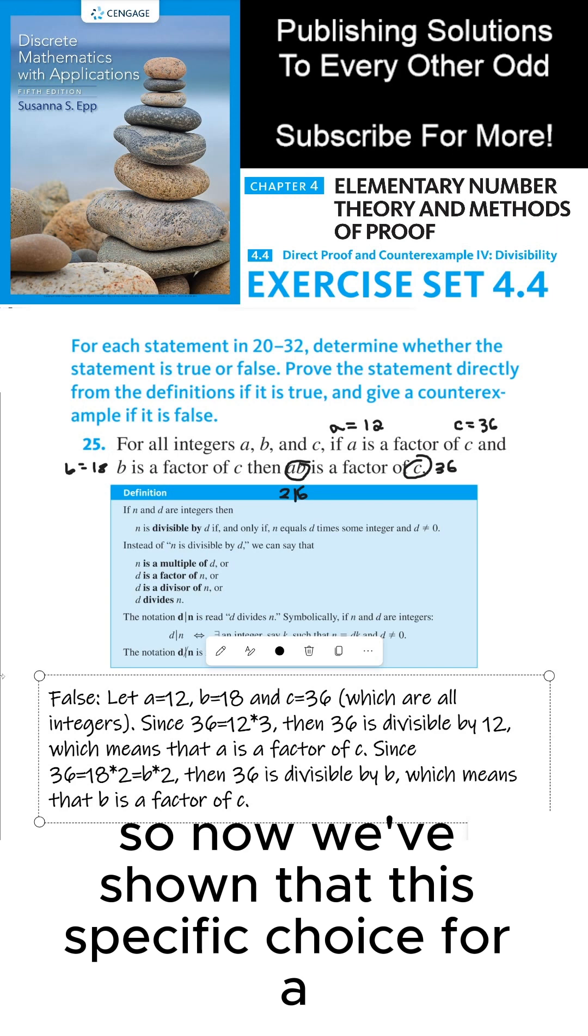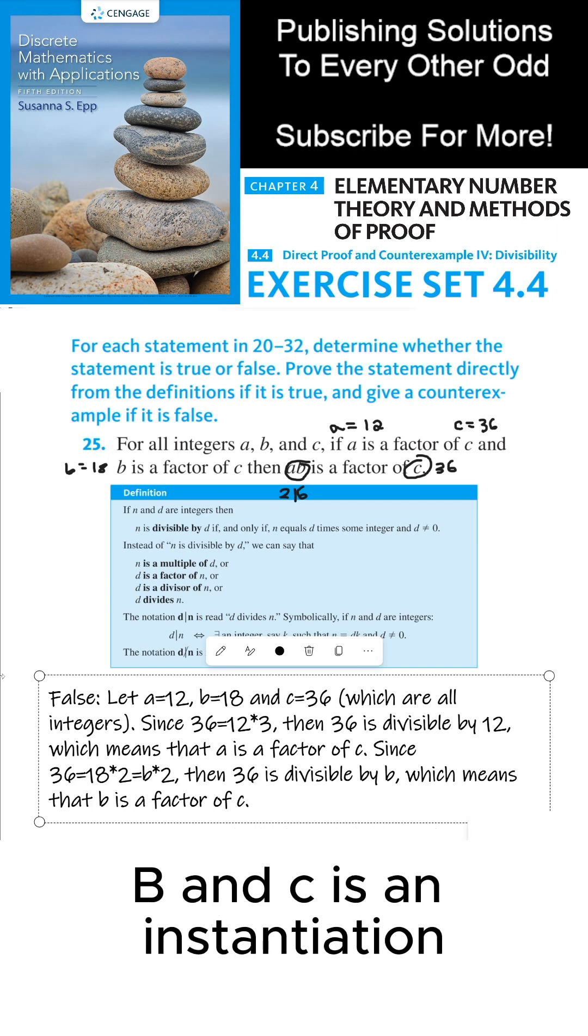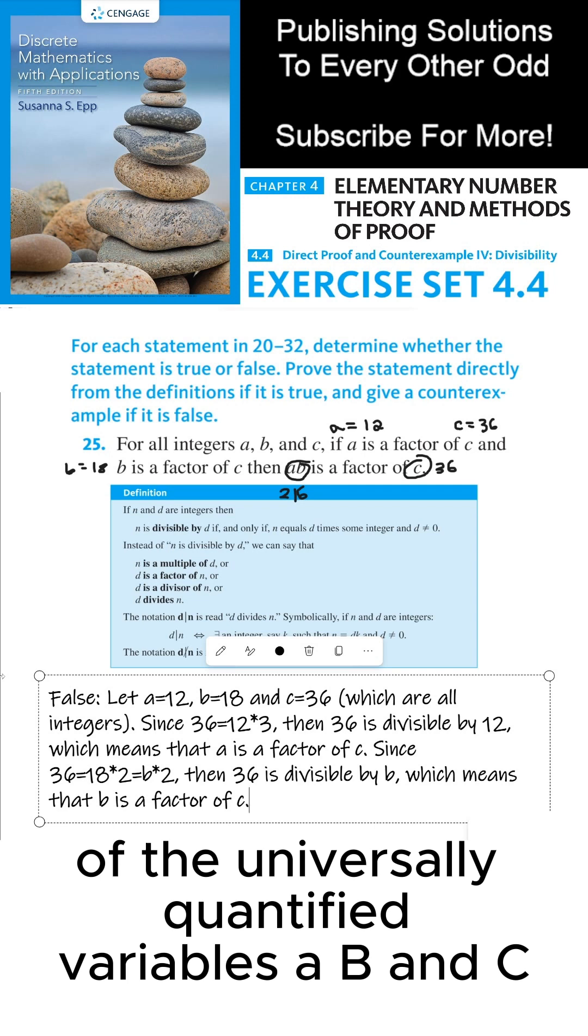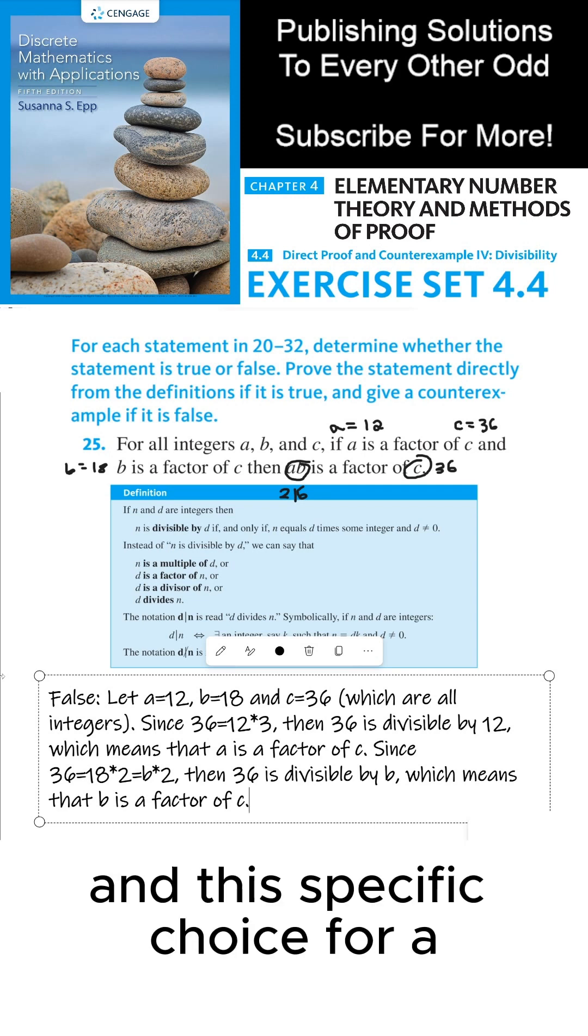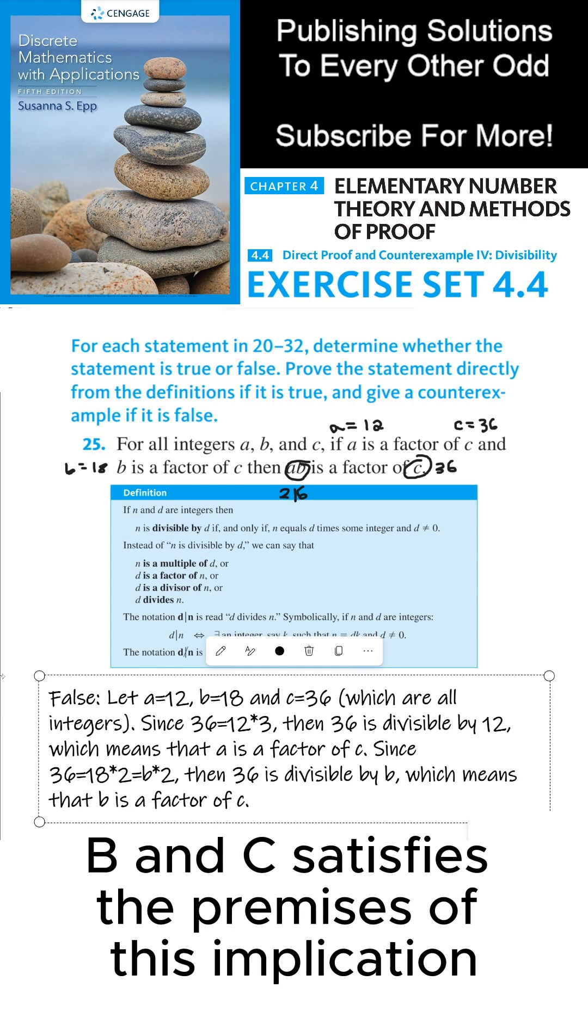So now we've shown that this specific choice for a, b, and c is an instantiation of the universally quantified variables a, b, and c, and this specific choice for a, b, and c satisfies the premises of this implication.